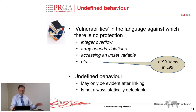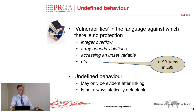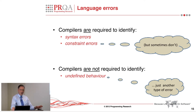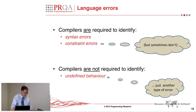It's a vulnerability in the language against which there's no protection. The main problem with undefined behaviour is that it's not always detectable. You can't always find undefined behaviour simply by looking in a single translation unit. You can't always find it by static means. Compilers are required to identify syntax and constraint errors, but they're not required to identify undefined behaviour, and largely they won't — which is obviously where other tools come in.